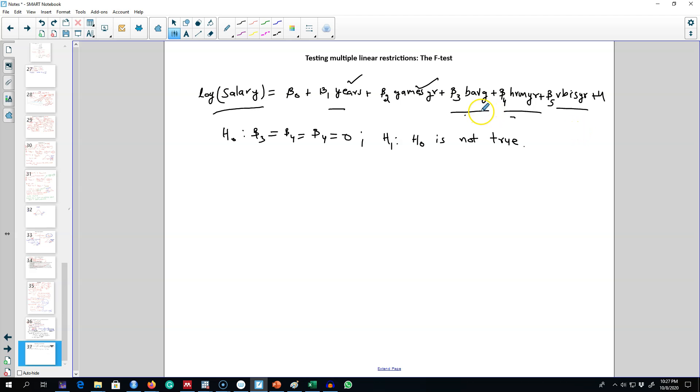These are our exclusion restrictions, and this type of test is called F-test or joint hypothesis test because we are testing all these hypotheses as a group rather than one particular individual parameter. To get the F-test values, the first thing we want to do is run this model which is our unrestricted model.